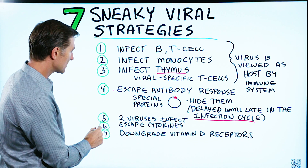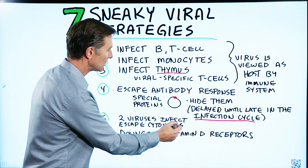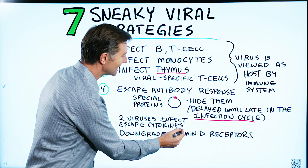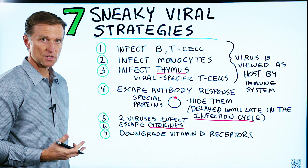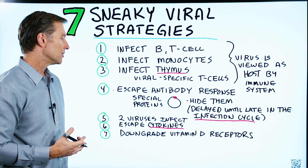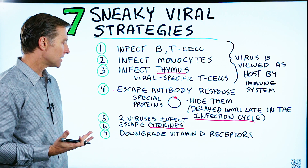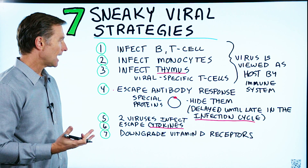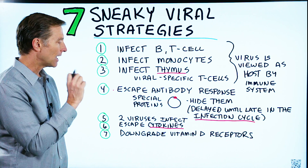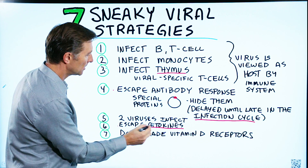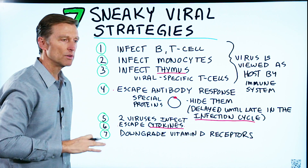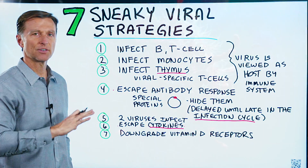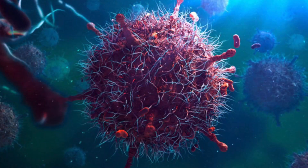Number six: escaping what's called cytokines, which are signaling molecules for the immune system. They're involved in inflammatory responses, and viruses can sometimes escape these, meaning there's no inflammation — nothing for your immune system to indicate that there's a virus there.